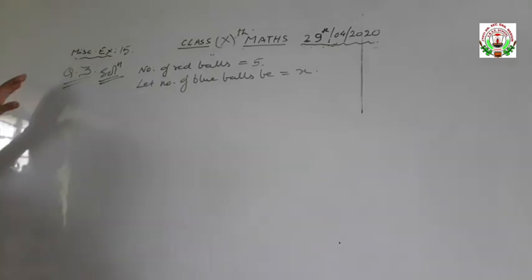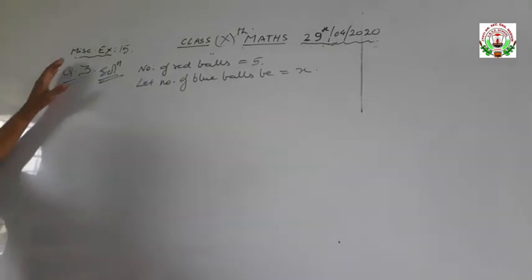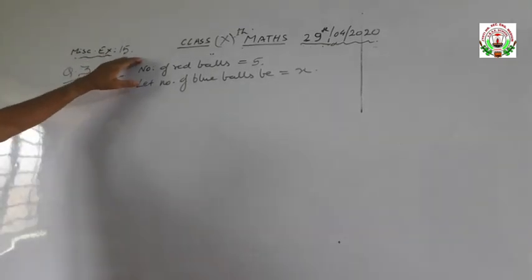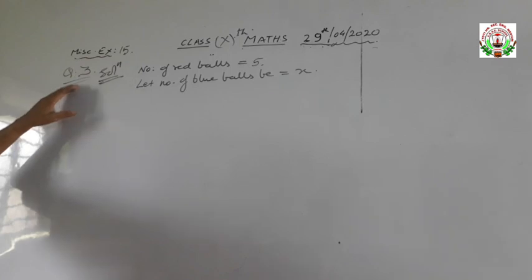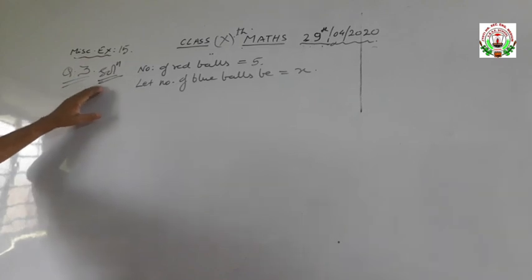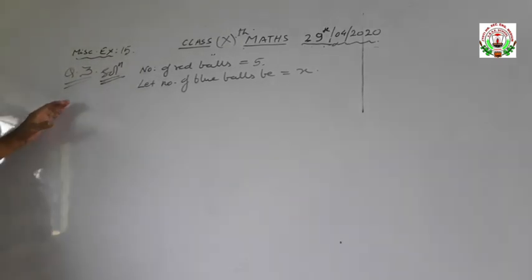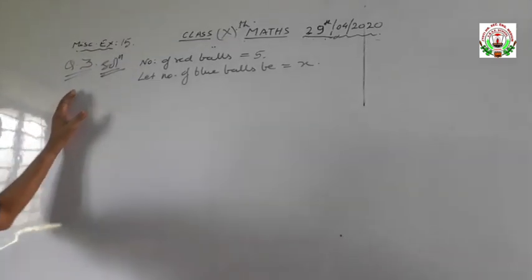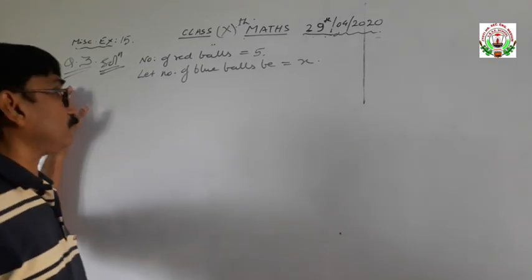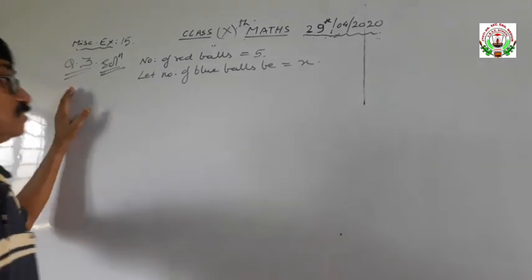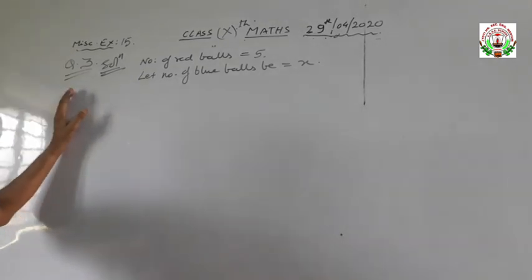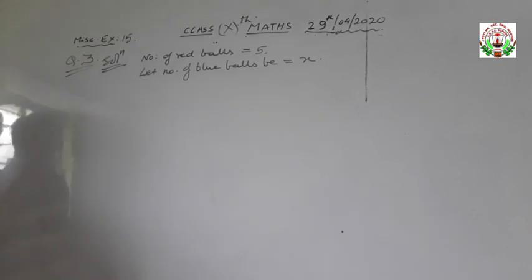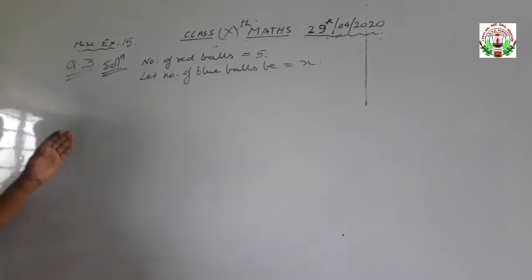Now we come to the Mishriniya's exercise 15, chapter probability, question number 3. It is given that in a bag there are 5 red balls and some blue balls. Let the number of blue balls be X.